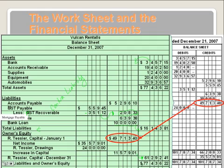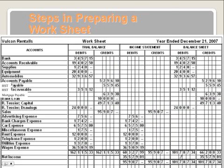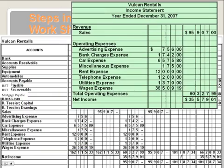Then add our liabilities to our owner's equity to get our total liabilities and owner's equity, which equals our total assets — so our balance sheet balances. You'll notice it's a different number than on your worksheet, so don't be concerned with that. Your worksheet just has our net income, which is required on the worksheet to make it balance, but this isn't necessarily the number you're looking for here.